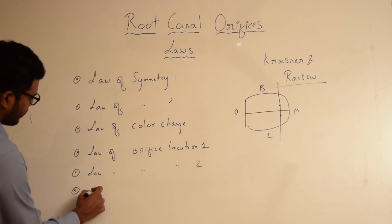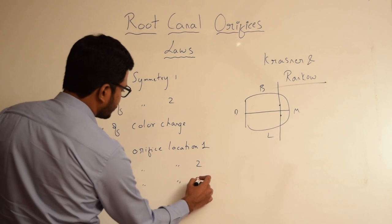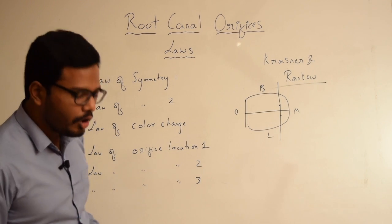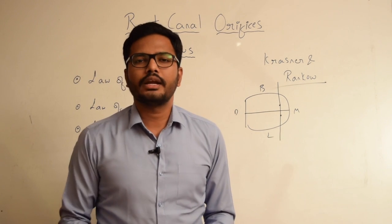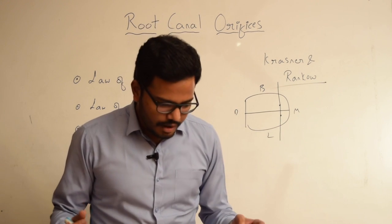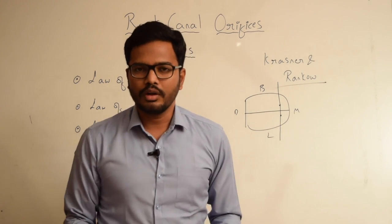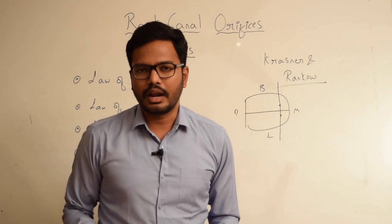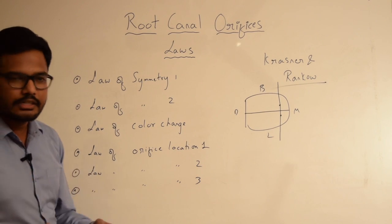Law of Orifice Location 3 states that canal orifices are present usually at the terminus of root developmental fusion lines. There are many root developmental fusion lines evident on the floor, and at the terminus of these developmental fusion lines we find the orifices.